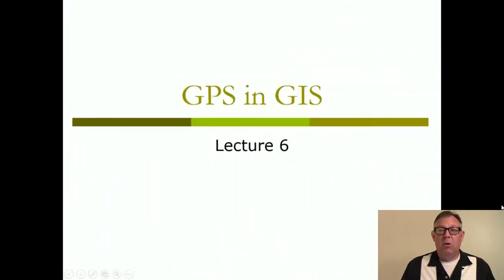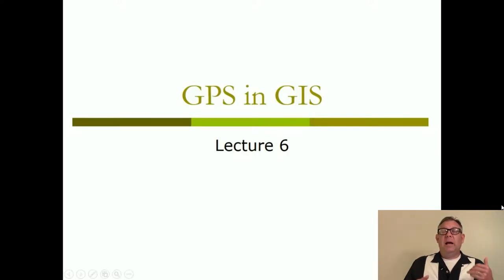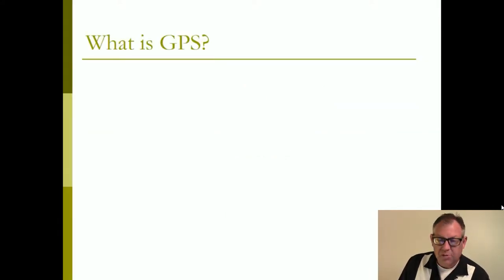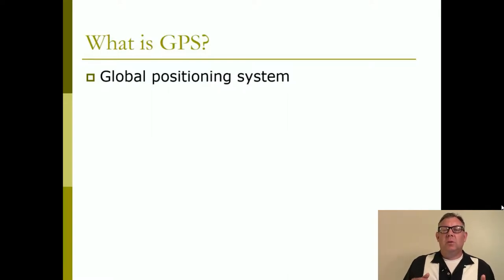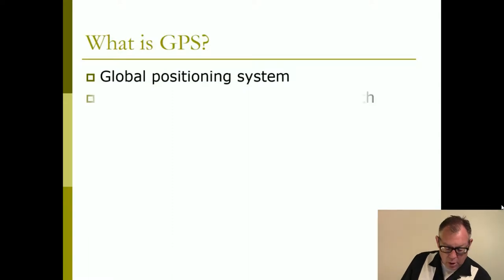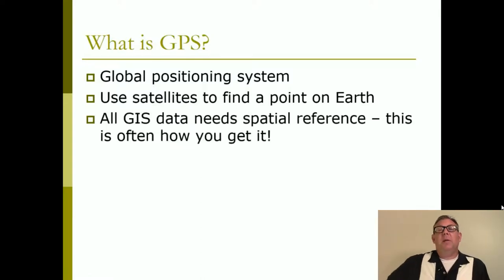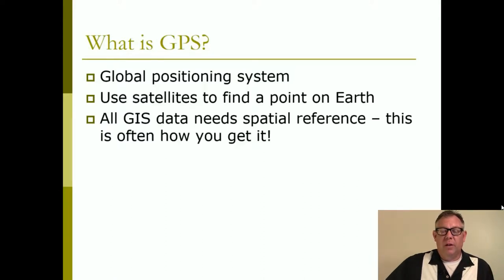What I want you to focus on is today's topic: using GPS in GIS. You've probably used GPS a bunch by now and don't even realize it. I want you to understand the basics behind how the GPS system works and how we're going to incorporate that into our GIS. GPS stands for the Global Positioning System — a way of finding the coordinates of a point on Earth using satellites. All GIS data requires a spatial reference, it requires coordinates, it needs to be geo-referenced. This is often how we're going to geo-reference data — by using a GPS.